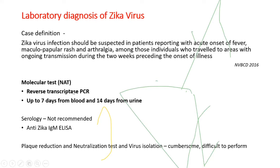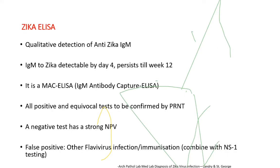Molecular test: reverse transcription PCR can be done up to seven days from blood and 14 days from urine. Serology — although not recommended because of cross-reactivity — Zika IgM ELISA can be done. Plaque reduction neutralization test and viral isolation are cumbersome methods done in reference labs. Zika IgM ELISA can become detectable by day 4 and persist up to 12 weeks, but every positive case should be confirmed by plaque reduction neutralization test, as false positives are possible due to cross-reactivity with other flaviviruses.